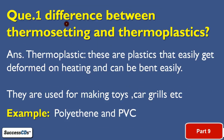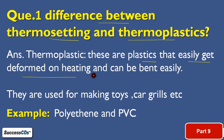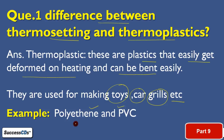The first question we are going to discuss is the difference between thermosetting and thermoplastics. Thermoplastics are the plastics that easily get deformed on heating and can be bent easily. They are used for making toys, car grills, etc. Examples are polythene and PVC — these are considered to be thermoplastic.